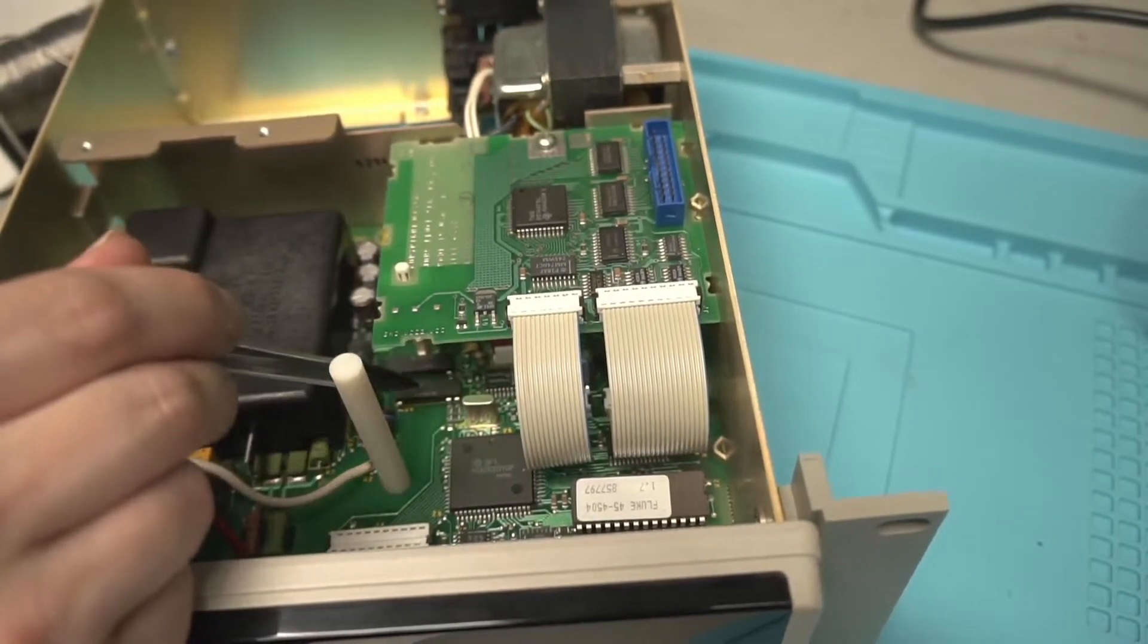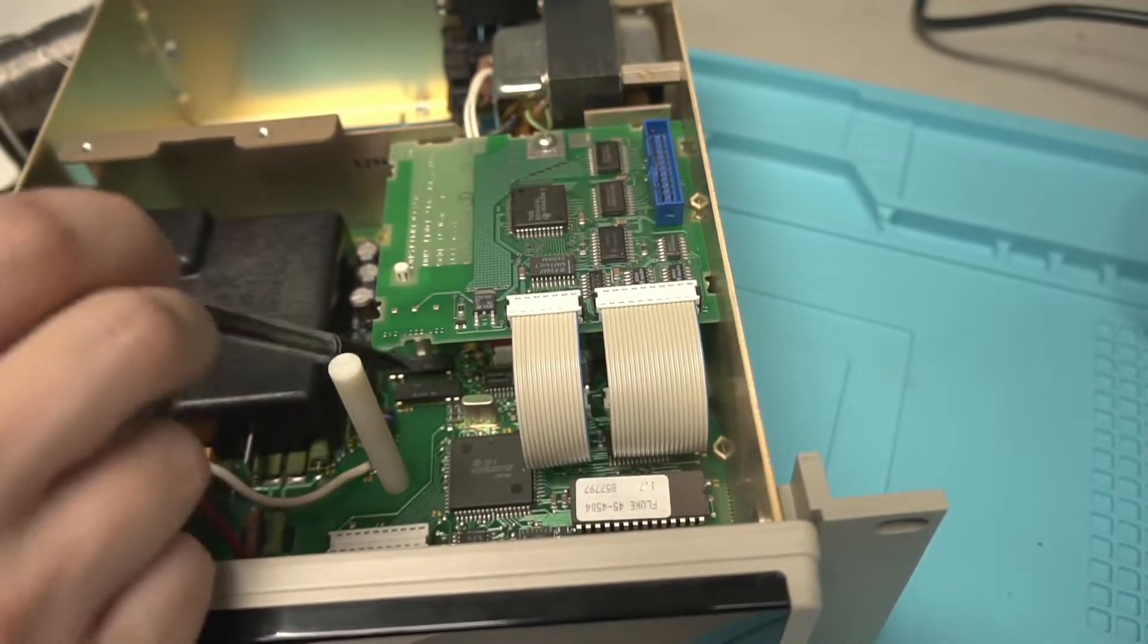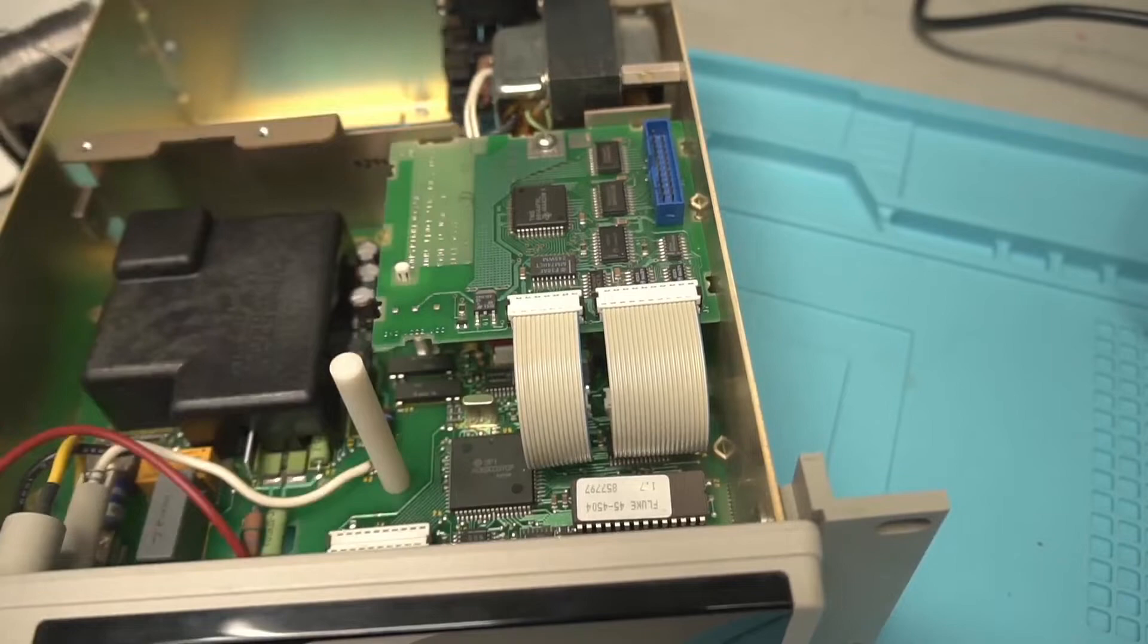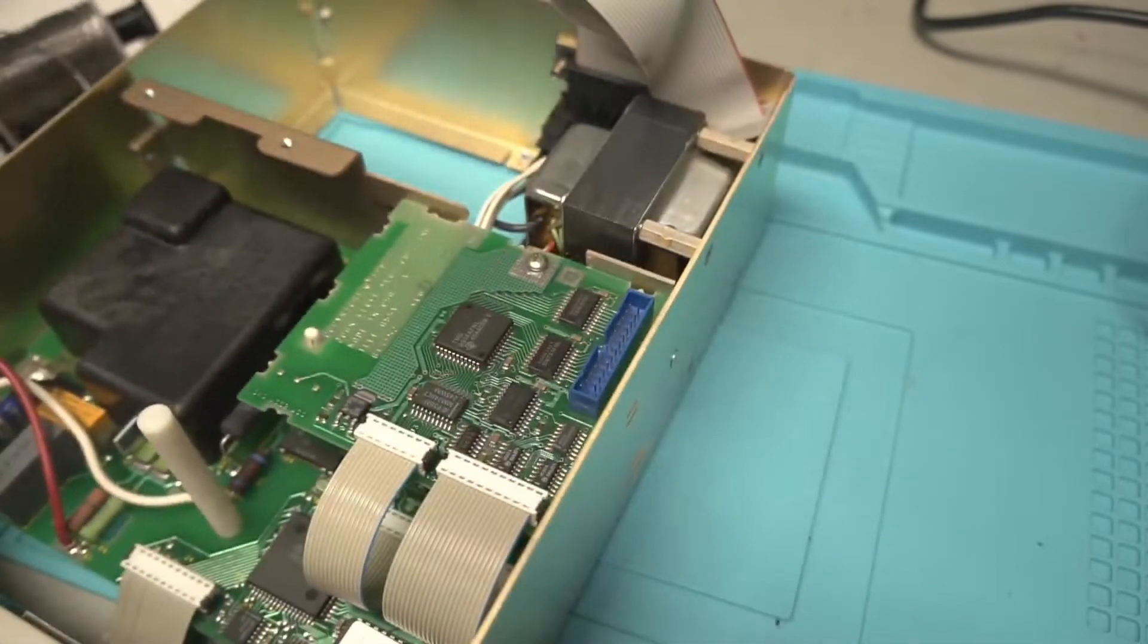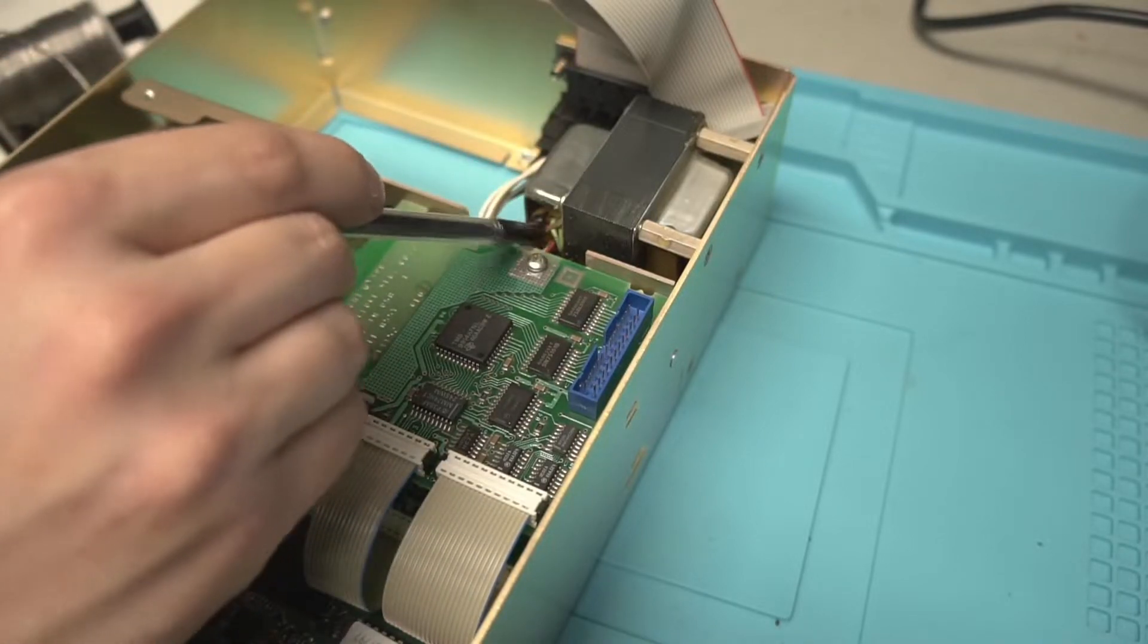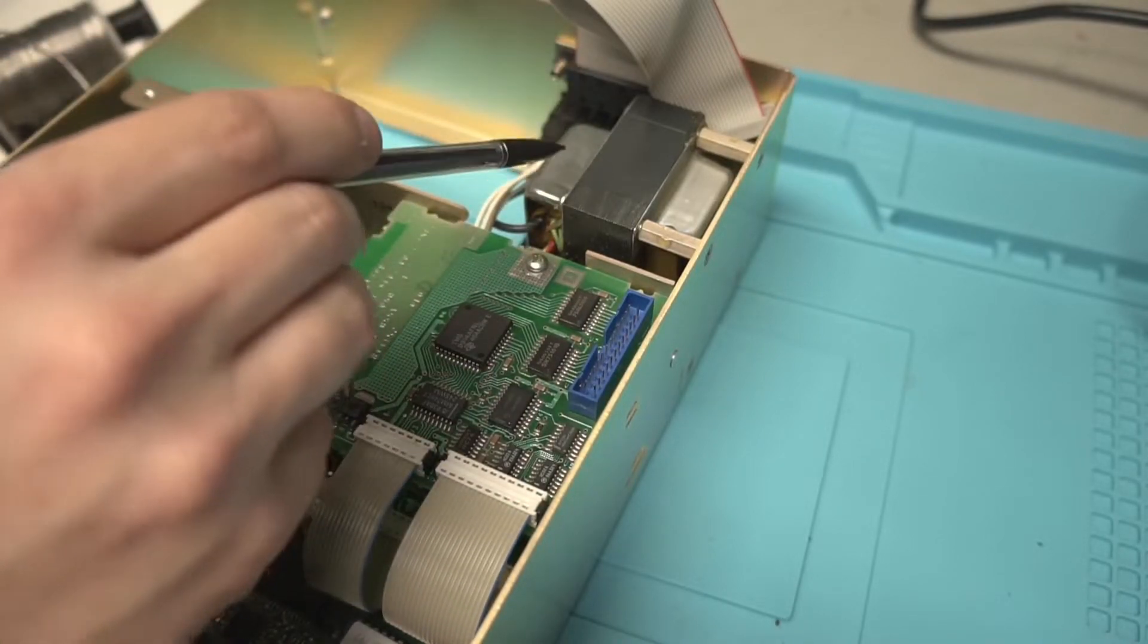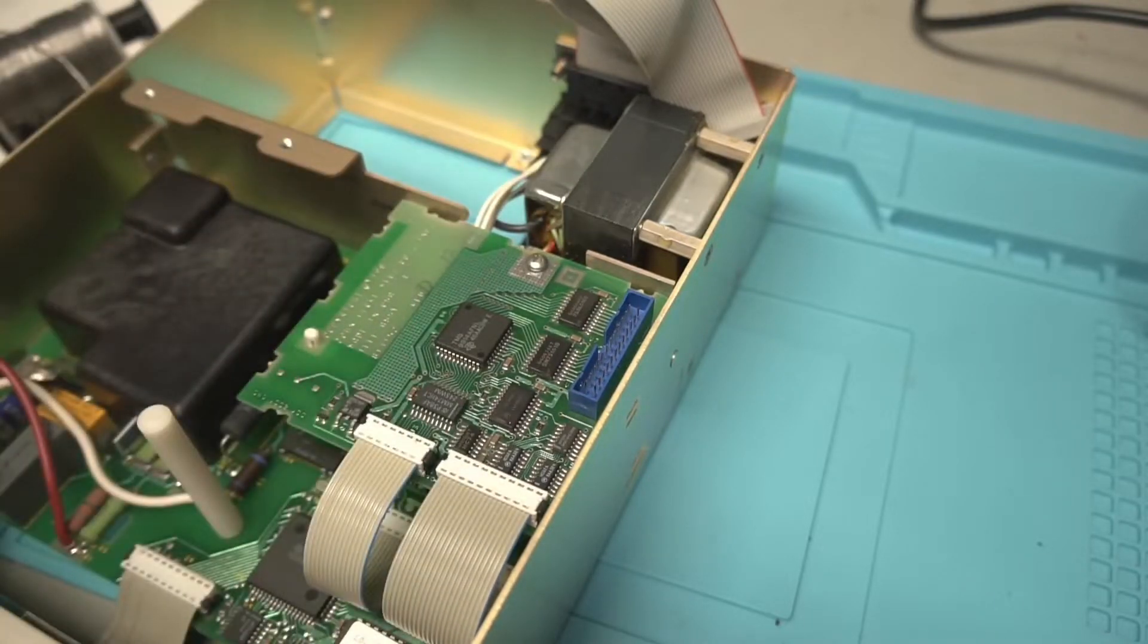So we have opto isolation, which means if something goes horribly wrong over here, it's not going to send it out and come out the port and damage your computer. So this is completely isolated. The transformer isolates it from mains earth and we even have this winding that goes in there that takes out any capacitive coupling too. So it's a really well made transformer for the inside here.